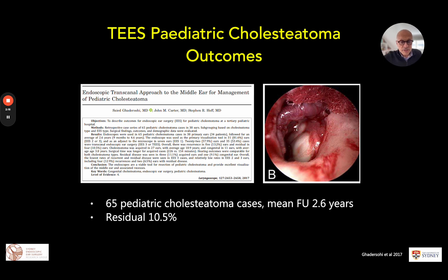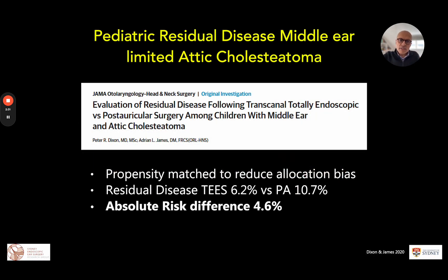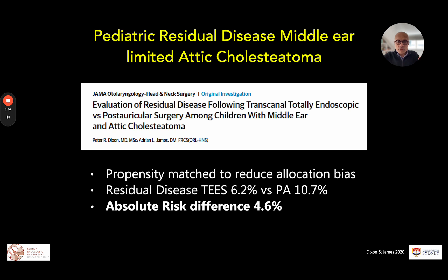Other papers from Stephen Hoff's group also showed lower residual rates in specific pediatric cholesteatoma of the middle ear with a mean follow-up of 2.6 years. For higher-quality data, work from Dixon and Professor Adrian James in Toronto used propensity matching to reduce allocation bias. Looking at limited attic cholesteatoma and middle ear disease, the endoscope showed a residual rate of around 6% compared to around 10.3–7% with post-auricular approaches, giving an absolute risk reduction of 4.6% in pediatric middle ear and attic cholesteatoma.